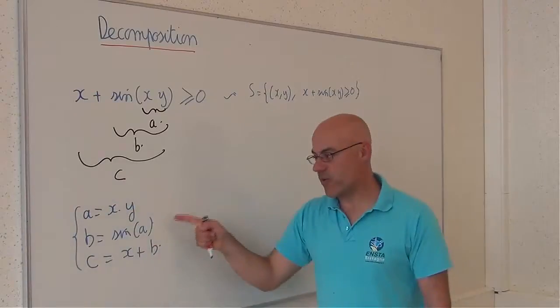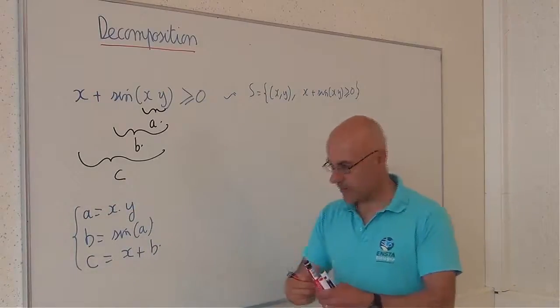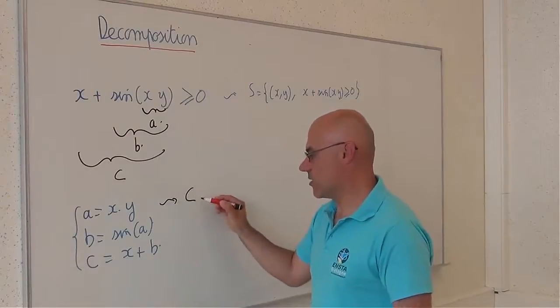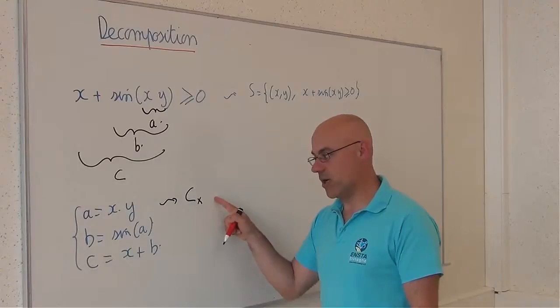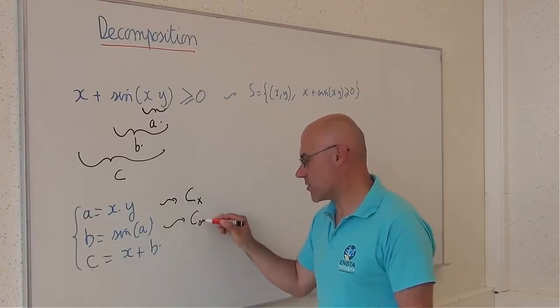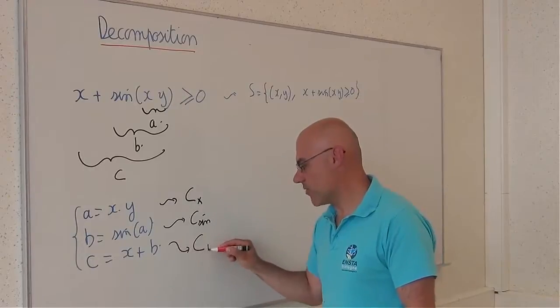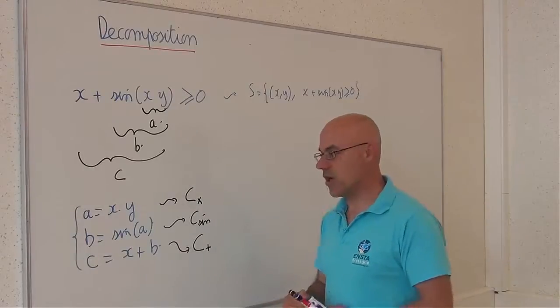These three equations are primitive. So I have a contractor for the multiplication, which is optimal, a contractor for the sine, which is optimal, and a contractor for the plus, which is optimal.